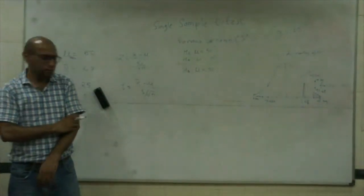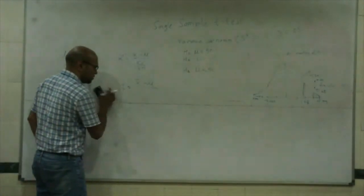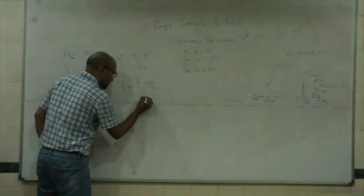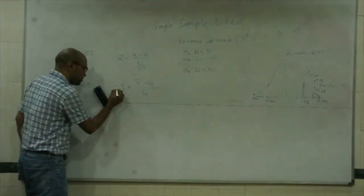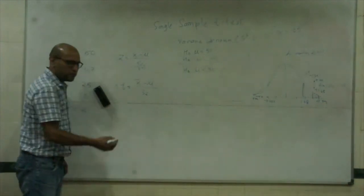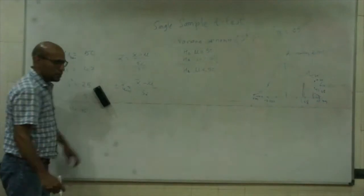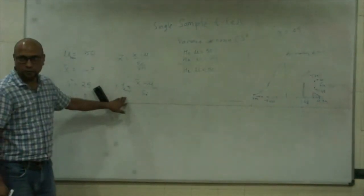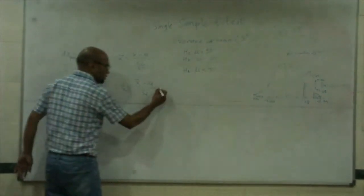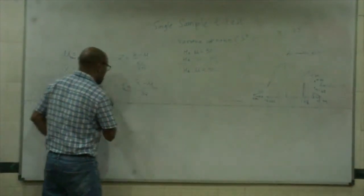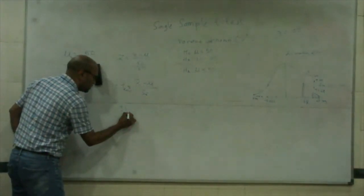This is S X bar. This is plus minus T at alpha by 2. Now, what will happen if I do something like this: plus minus T at alpha by 2 multiplied by S X bar.